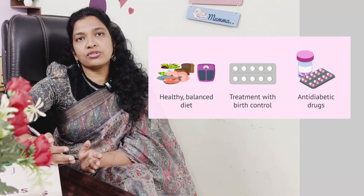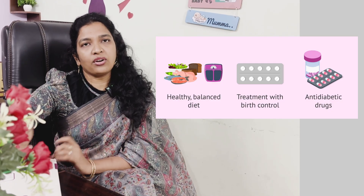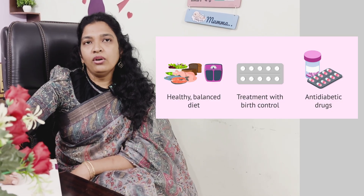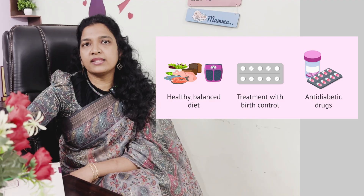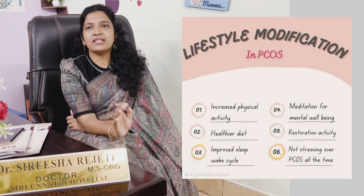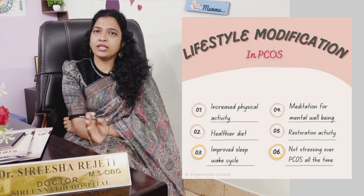When it comes to treatment: for regularization of cycles, we prescribe hormonal pills — OC pills. In cases of infertility, we give ovulation induction drugs. For acne, antiandrogens are prescribed. First and foremost, lifestyle modification is the most important step.